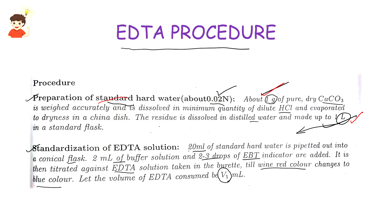Now, we are going to prepare it in 1 litre. We take 20 ml of the hard water, add 2 ml buffer solution and 2-3 drops of EBT indicator. Then it is titrated with EDTA. The end point is the color change from wine red to blue.